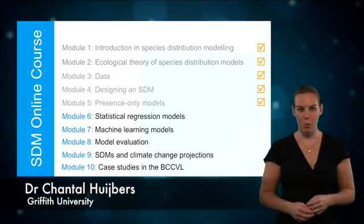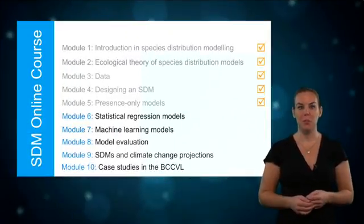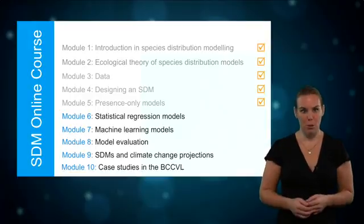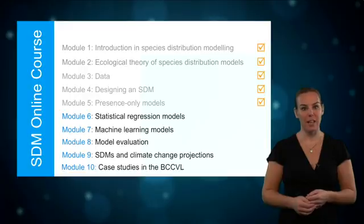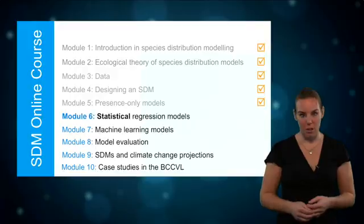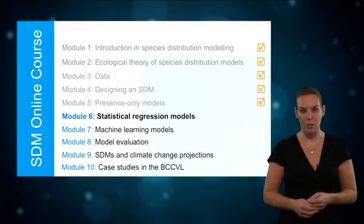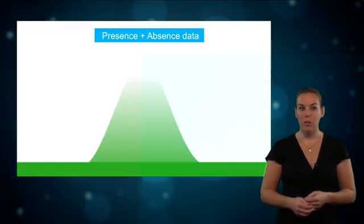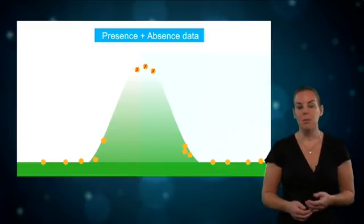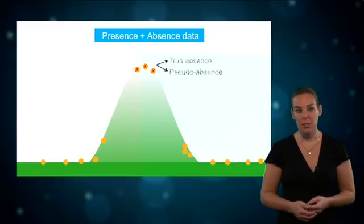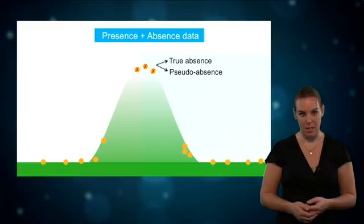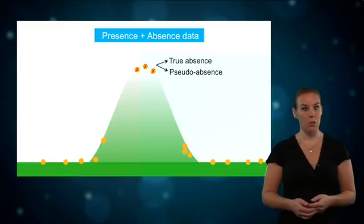Welcome back to this online open course about species distribution modeling. In the previous module we looked at models for which you only need to provide occurrence data to predict the distribution of a species. In this module we will focus on statistical regression models, which use both presence and absence data. We covered in module 3 that absence data can either be true absence data, or if such data is not available, you can make up absence data, which is referred to as pseudo-absence data.